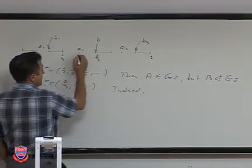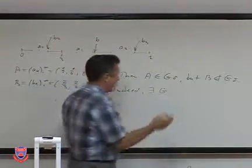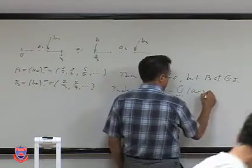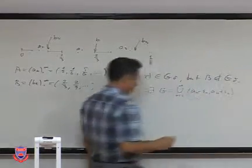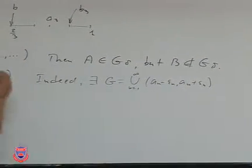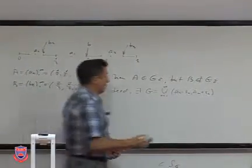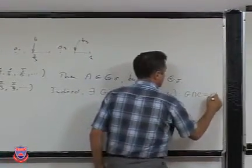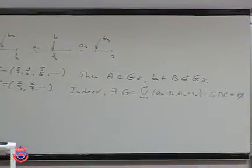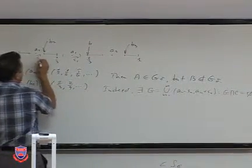Why can we do this? Because there exists an open set G — just a sequence of intervals — G equals the union from n=1 to infinity of (a_n minus epsilon_n, a_n plus epsilon_n), that covers all these points. Moreover, we can choose it so that this set G is disjoint from the Cantor set, since these points are from the complement of a closed set. We can choose epsilon_1, epsilon_2, and so on accordingly.